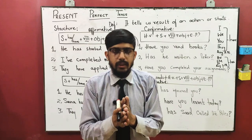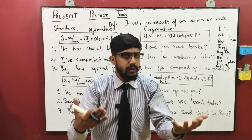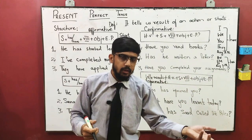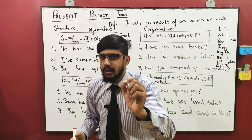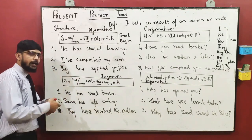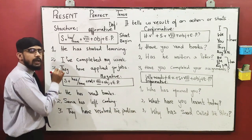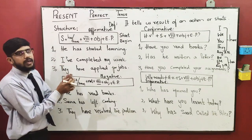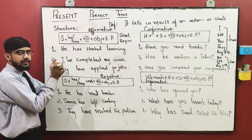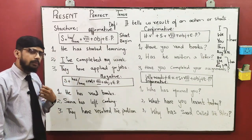He has started learning - usne parna shuru kar diya hai. Now the action he started, that action is complete, all right. For example, he said I want to learn. When he wanted to learn, he picked up a book or started doing some work, and that work he completed.